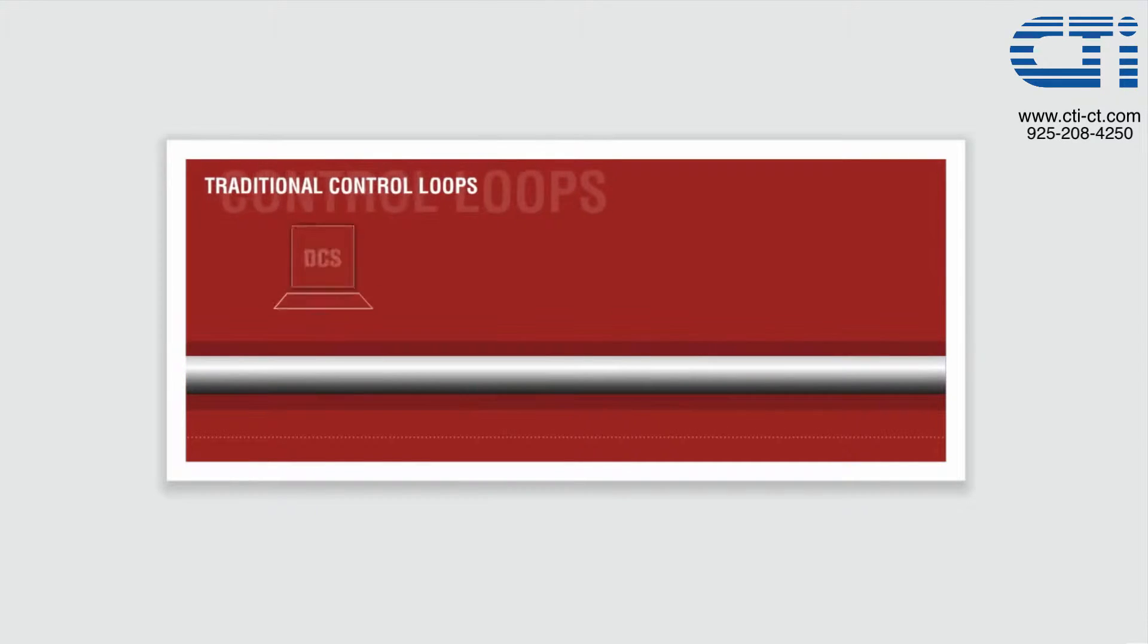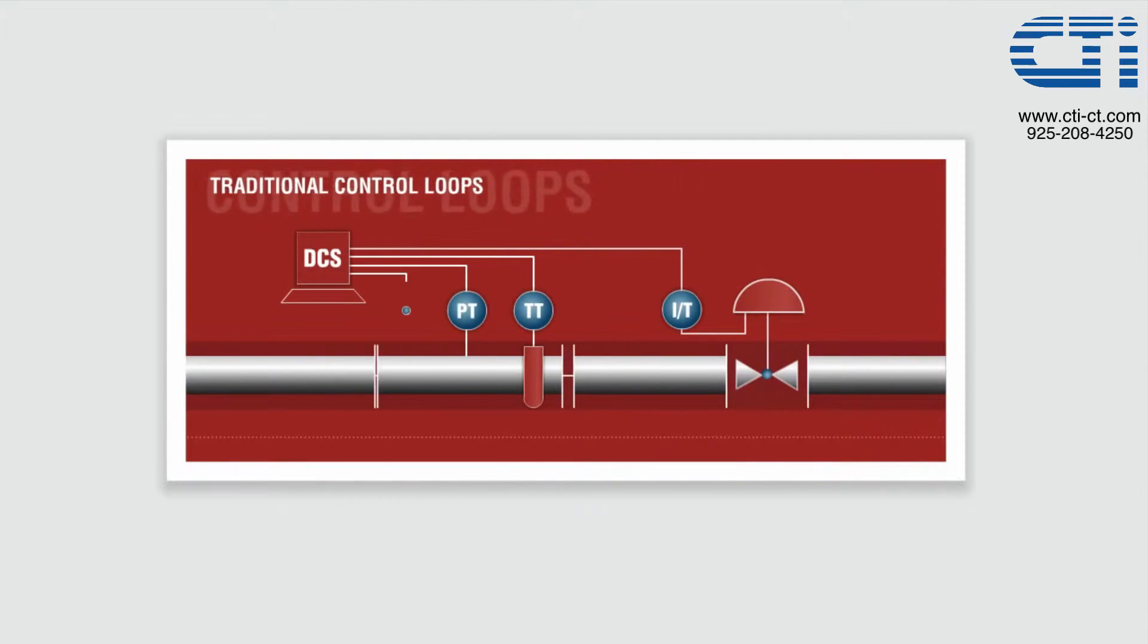Traditional control loops consist of a flow measurement device called an orifice plate, a temperature transmitter to measure temperature, a control valve, and a controller to compare the actual flow rate with the desired flow rate or set point.